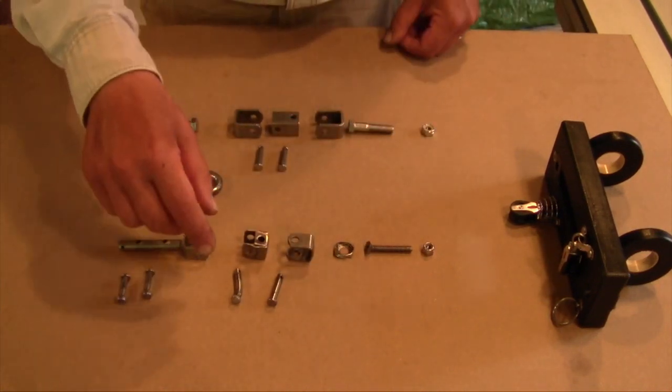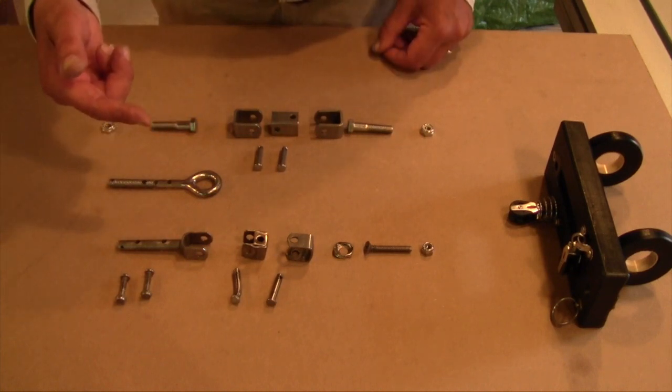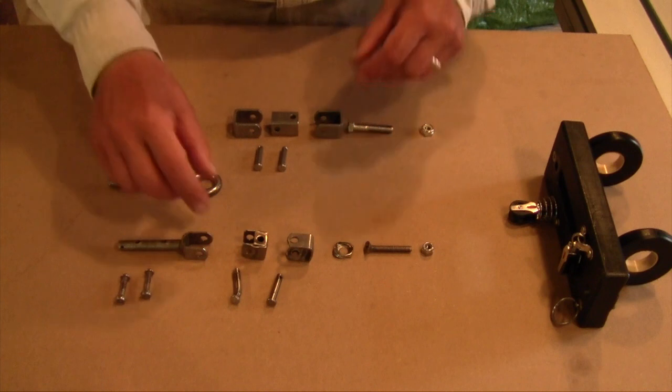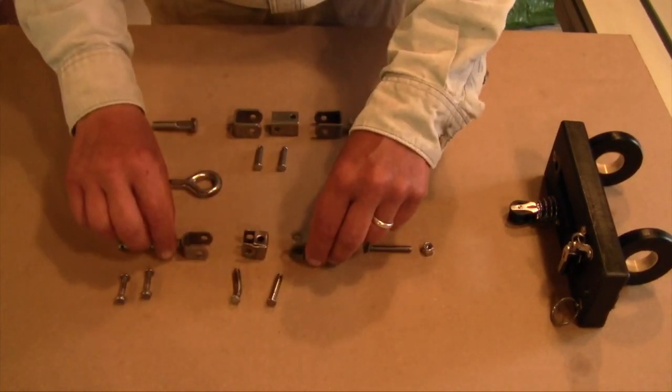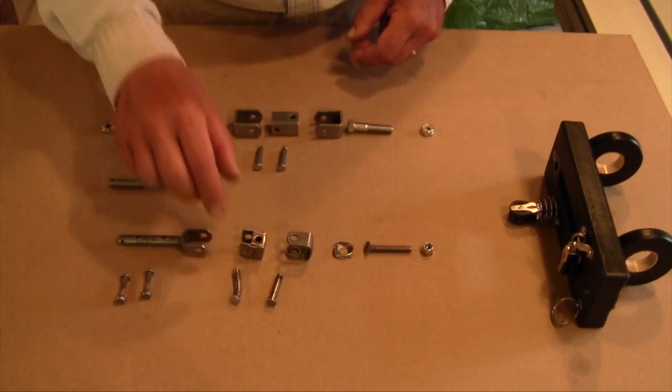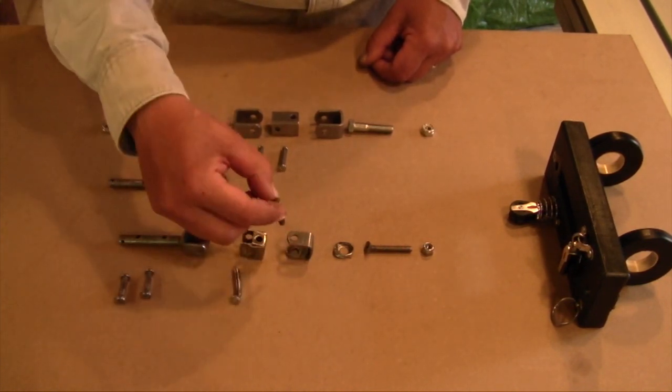And the general approach is to have two U-shaped brackets and a piece in between called a universal, and this one gets pinned vertically and this one horizontally, and that provides the freedom of motion required.